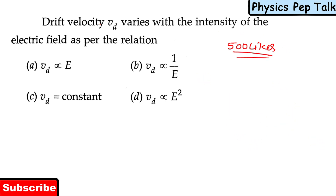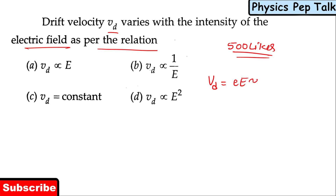Drift velocity Vd varies with the intensity of the electric field as per the relation. We have derived the expression that drift velocity Vd is equal to eEτ by m.